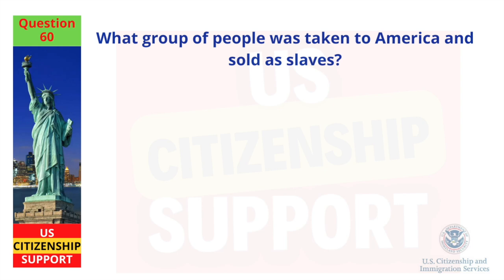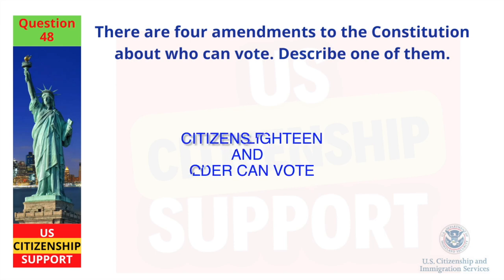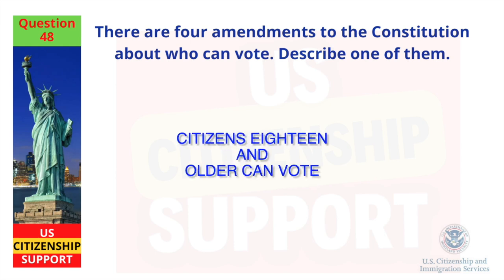What group of people was taken to America and sold as slaves? There are four amendments to the Constitution about who can vote. Describe one of them. Citizens 18 and older can vote.